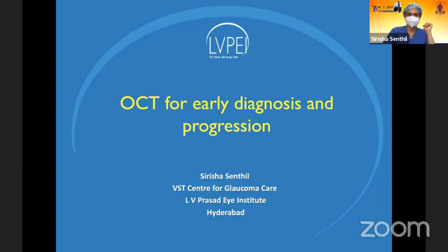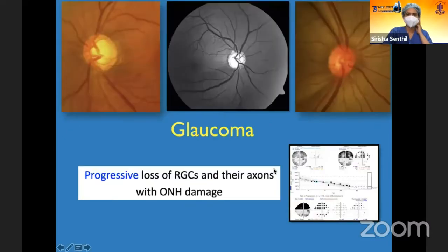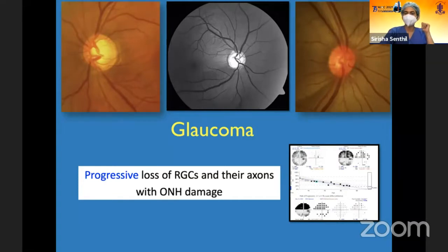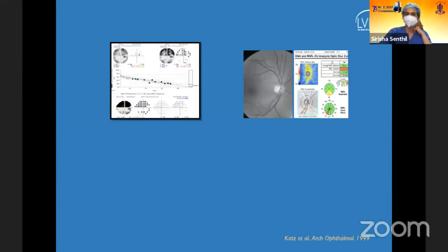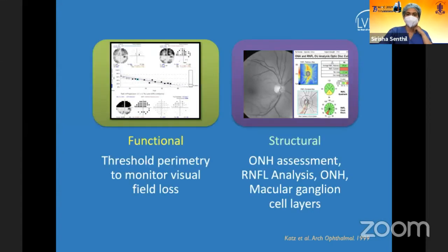We will start with OCT in early diagnosis and progression of glaucoma. Glaucoma is a progressive disease with loss of retinal ganglion cells and their axons, with resultant optic nerve head damage, leading to progressive loss of visual field if untreated. Our aim is to pick the disease up early, minimize damage at diagnosis, and ensure stability once diagnosed.